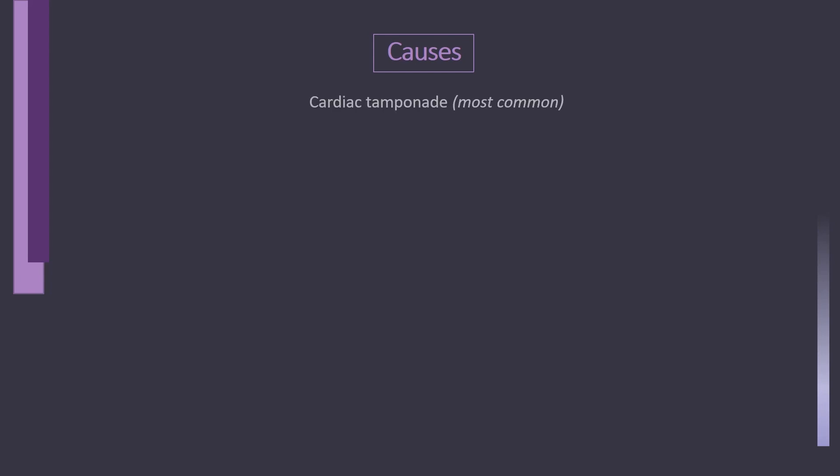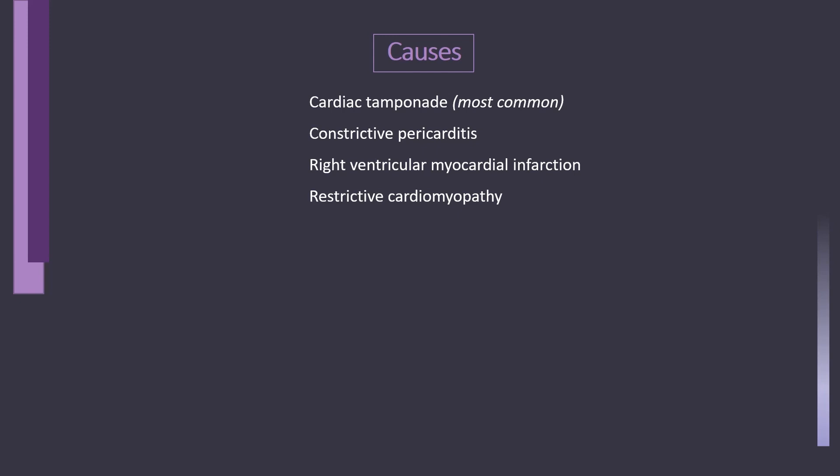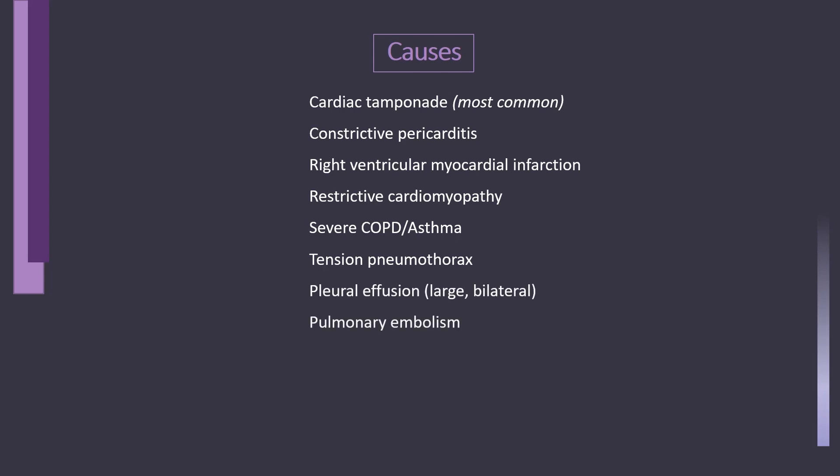Now let's see which conditions can cause pulsus paradoxus. Cardiac tamponade is the most common cause. Other causes include constrictive pericarditis, non-pericardial cardiac diseases such as right ventricular myocardial infarction and restrictive cardiomyopathy. Additionally, pulmonary diseases like severe COPD, asthma, tension pneumothorax, large bilateral pleural effusion, and pulmonary embolism can lead to pulsus paradoxus.